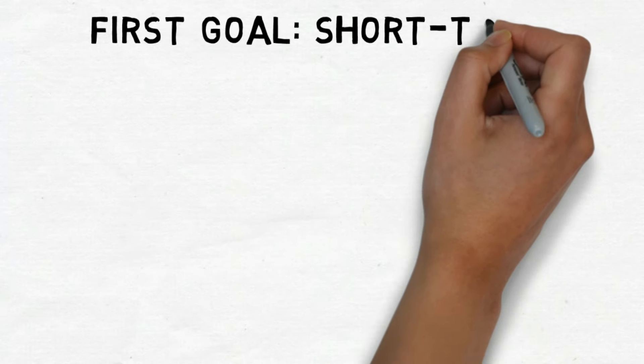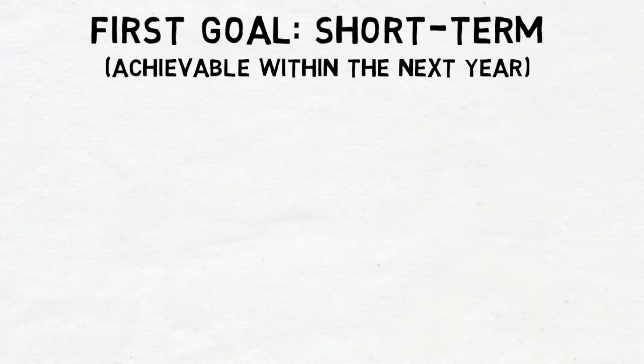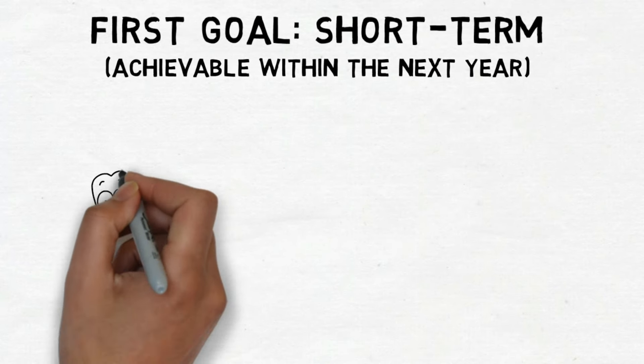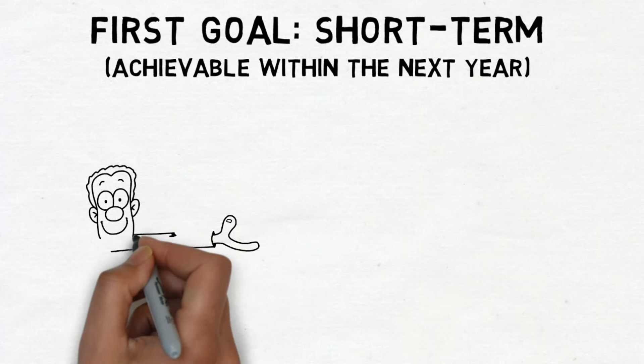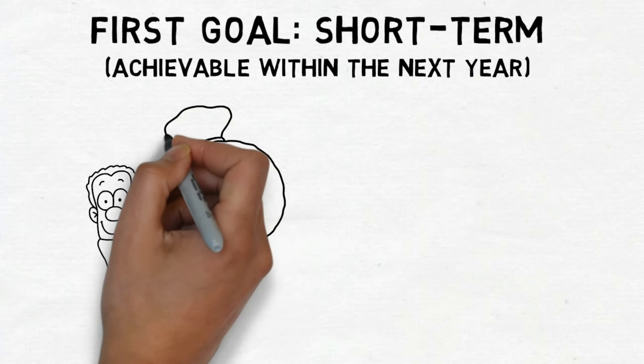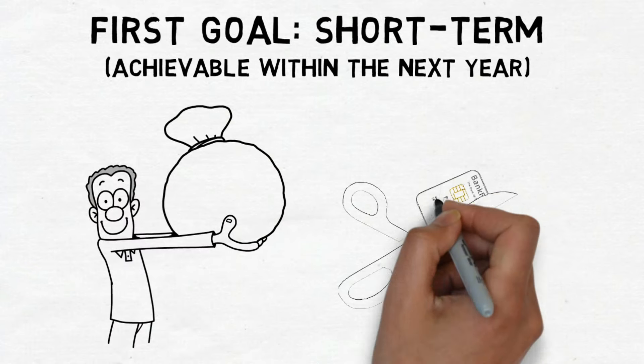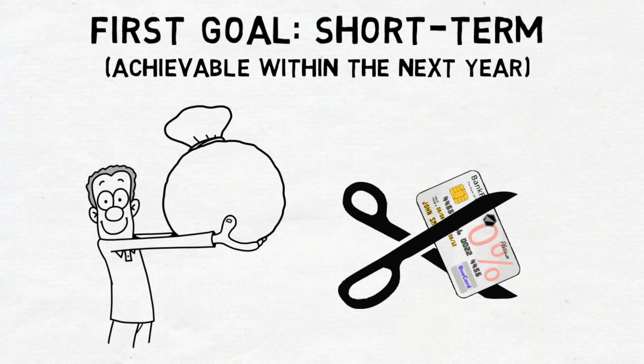Your first goal should be short-term, achievable within the next year. For instance, a worthwhile short-term objective might involve saving $1,000 within the coming month or paying off a specific credit card balance entirely.